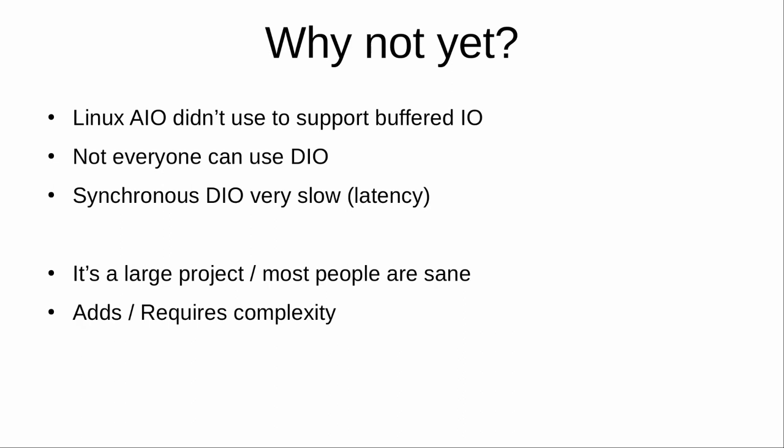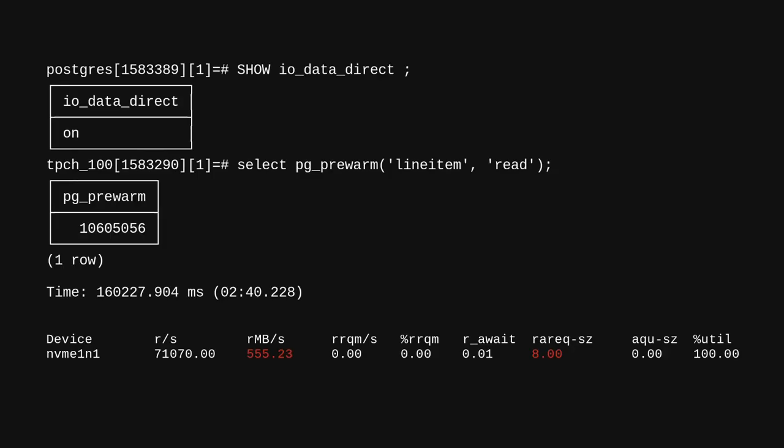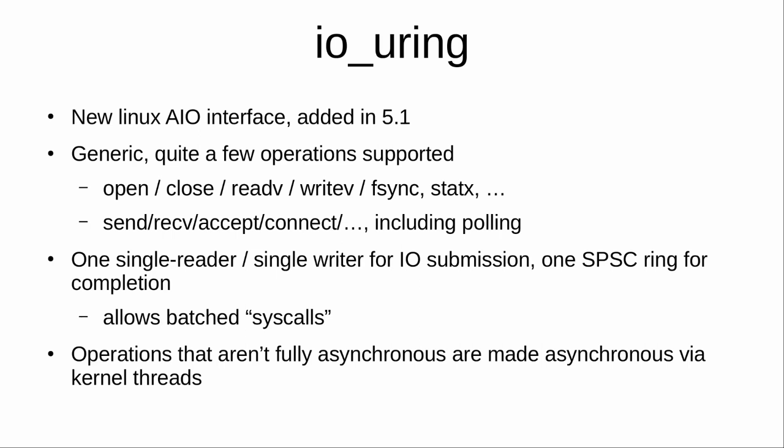So what has changed to make it viable to add it now? For me, the big reason is that Linux has gotten a new asynchronous IO interface called io_uring. It's been added to the kernel in version 5.1. It's a fairly generic interface — there are a lot of different IO operations supported, many more than were previously supported for the old IO interface. One can do network IO, open and close files, and so on.